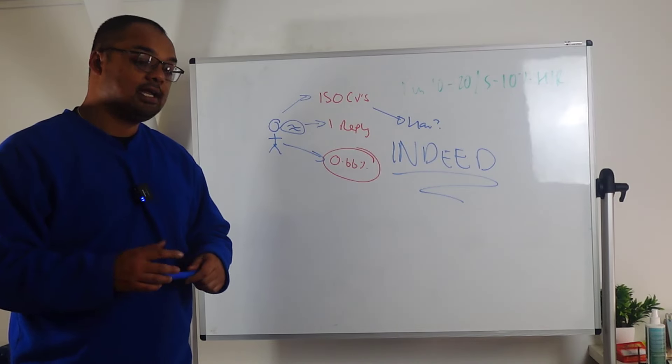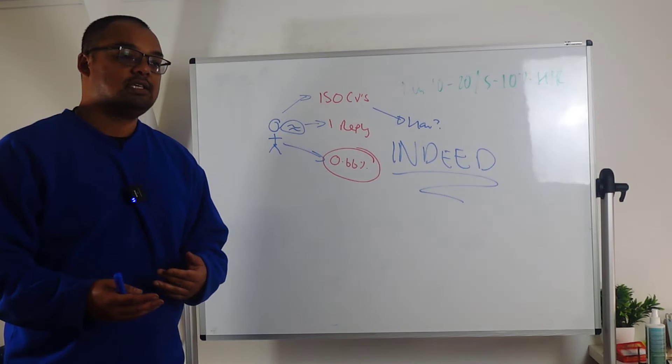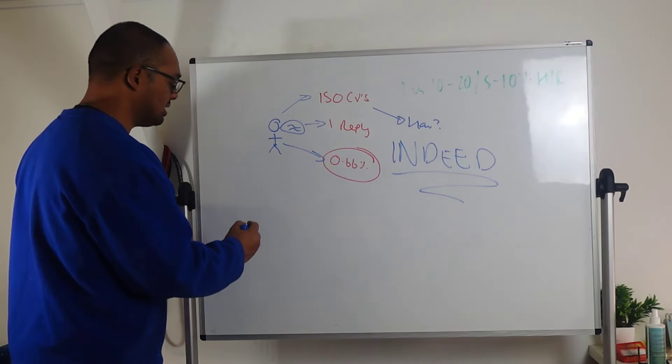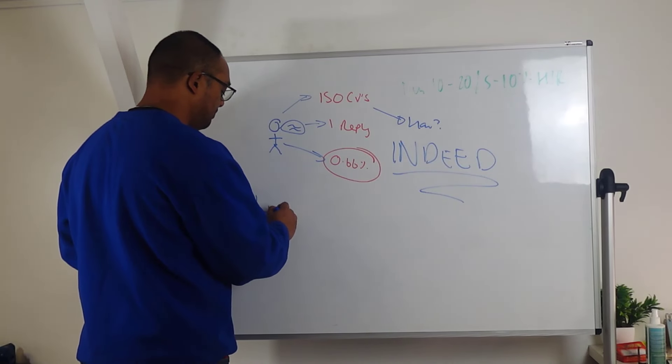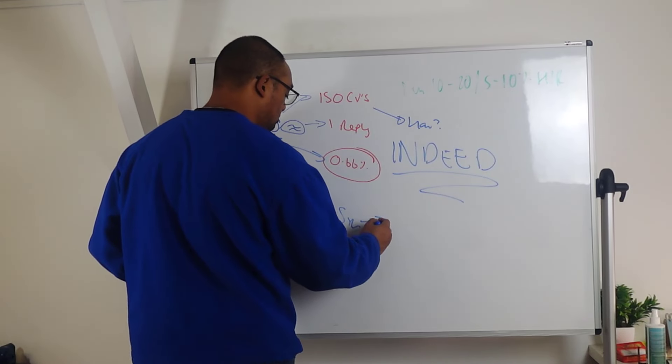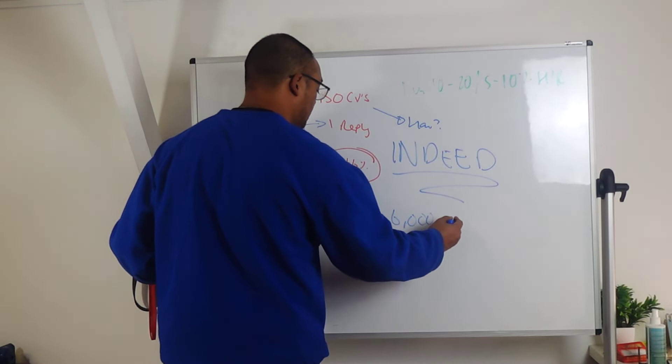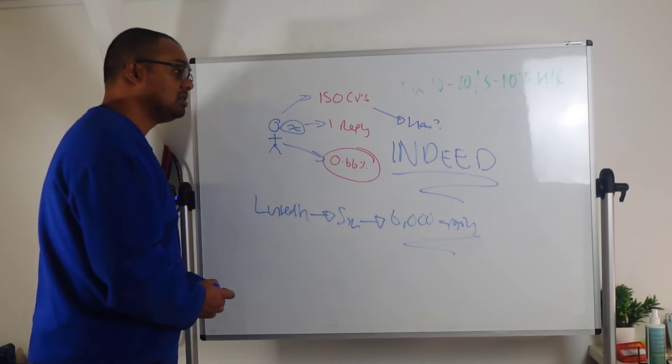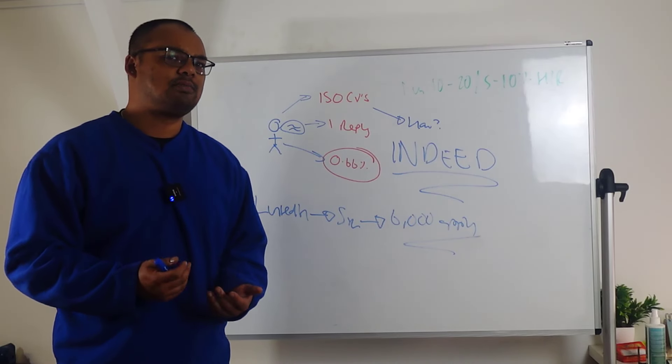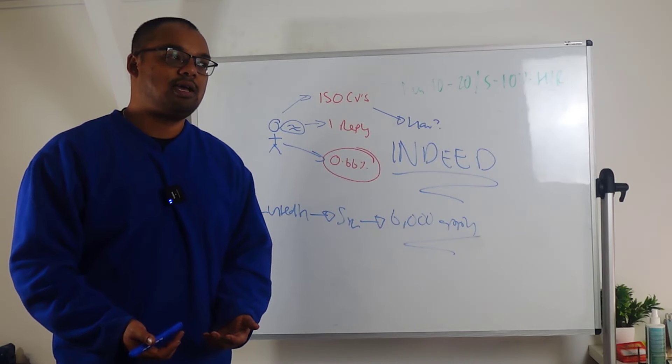So Indeed, LinkedIn, all of these, what are essentially like job search engines, right, make it super easy for people to apply for jobs. What does that mean? So say a job gets advertised on LinkedIn, and then within about five minutes, 6,000 people apply. Why? Because they've got one-click apply, because they all get notified, and it doesn't matter how good you are, it's really hard to stand out from 6,000 people.